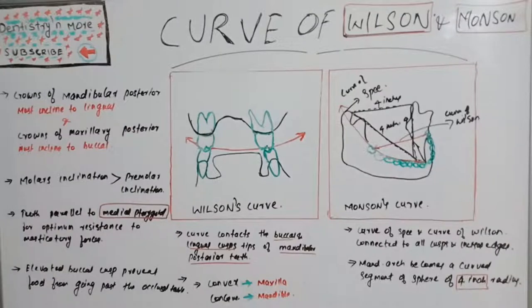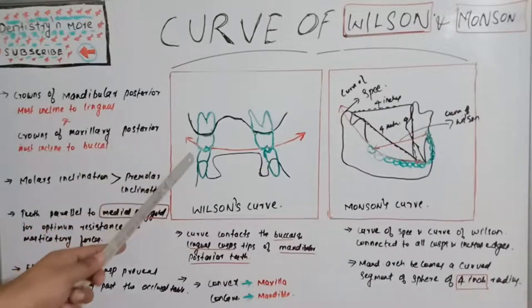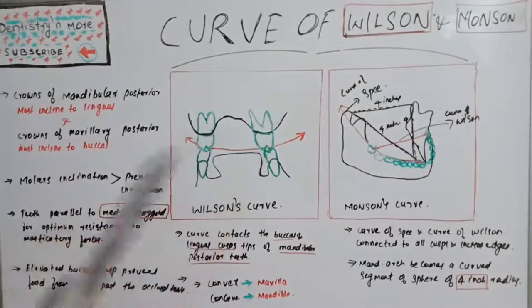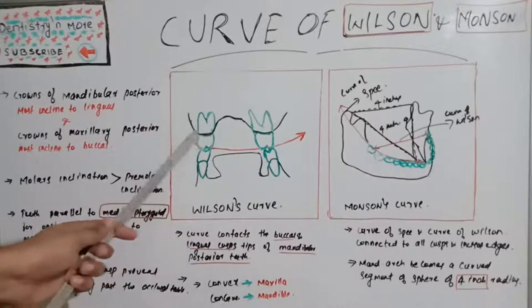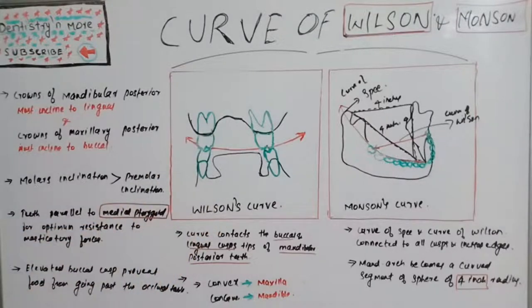What is the importance of this curve? All these compensatory curves help us arrange the teeth to a perfect or ideal occlusion. The crowns of mandibular posterior teeth must incline to lingual aspects, and the crowns of maxillary posteriors must incline to buccal side. Then only we get a proper curve of Wilson.